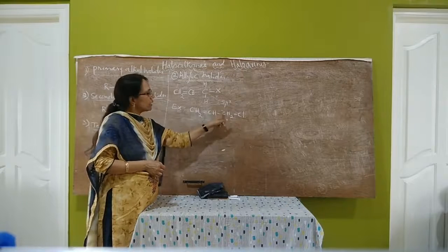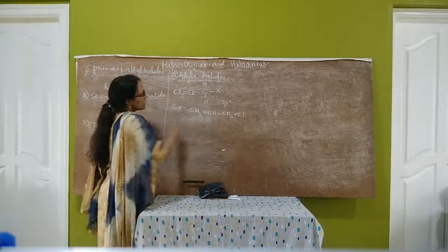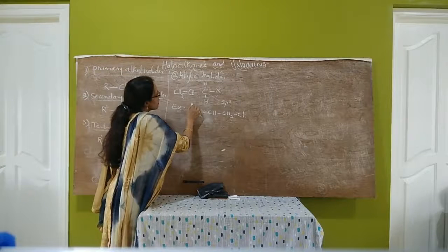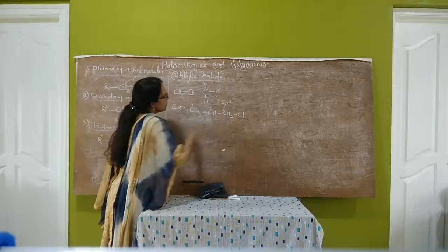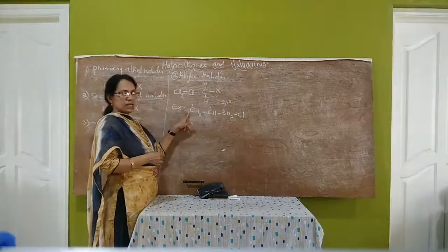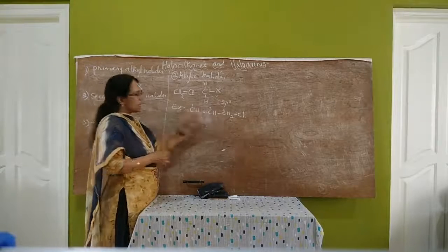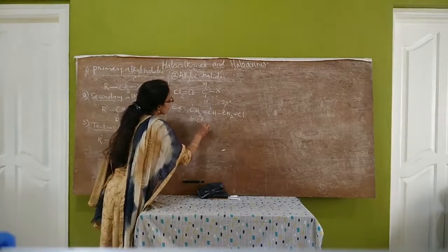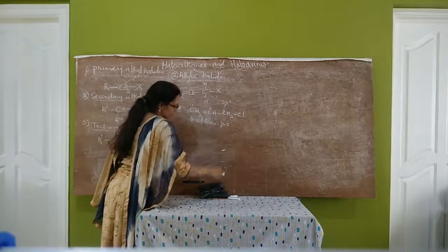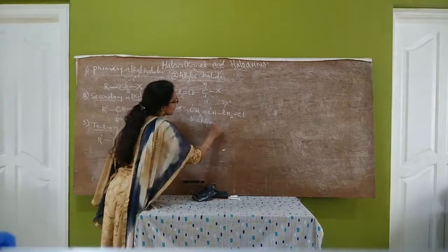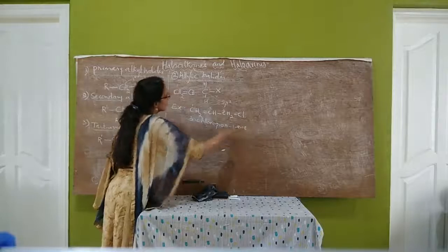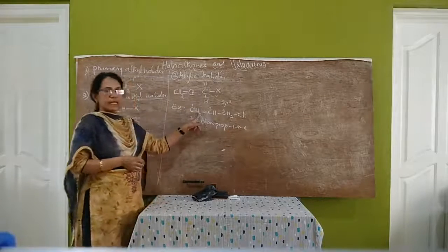Allylic chloride it is. The IUPAC name of this compound — we number from the left end: 1, 2, 3 — three carbon atoms. So this is 3-chloro-prop-1-ene. The IUPAC name is 3-chloro-prop-1-ene. So this is an allylic halide.